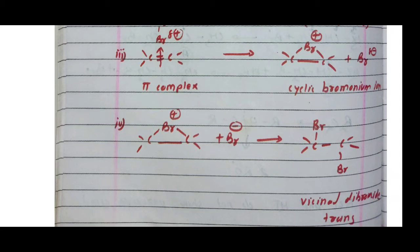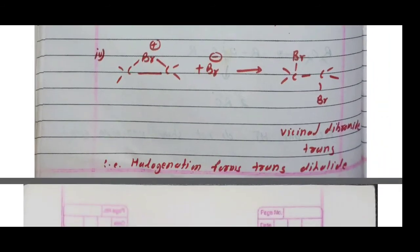Step four: the nucleophile Br⁻ ion attacks the cyclic bromonium ion from the back side to form a vicinal dihalide. Because of this back-side attack, a trans-vicinal dibromide is formed. This is step four — halogenation forms a trans-vicinal dihalide, and this halogenation reaction follows a four-step mechanism.